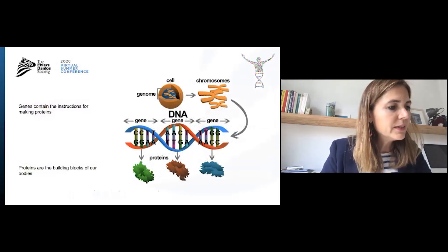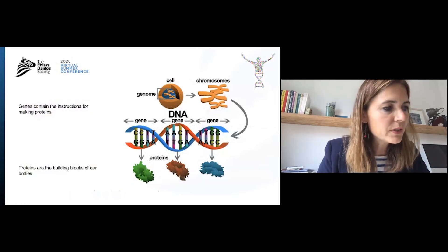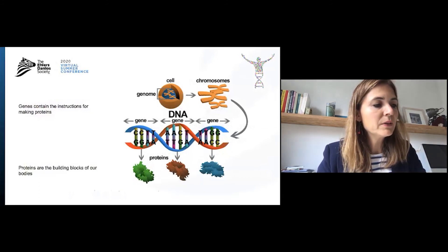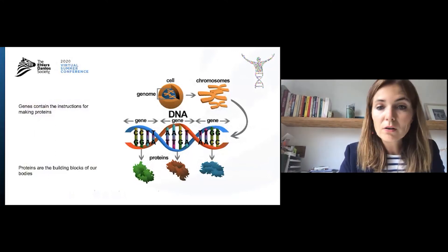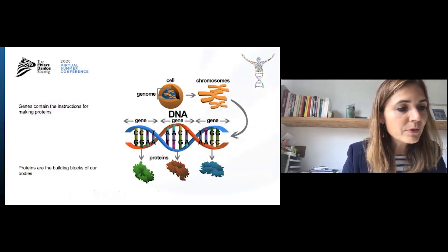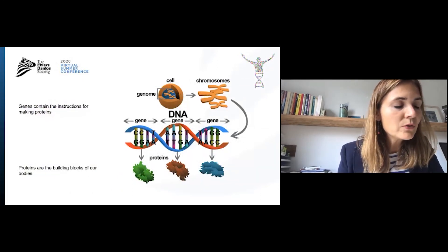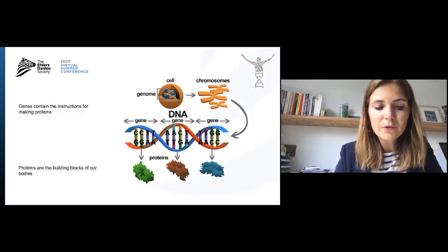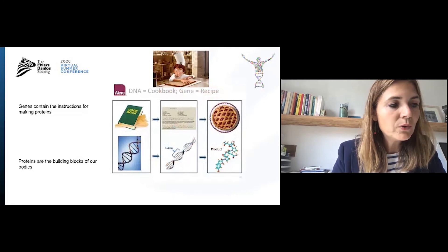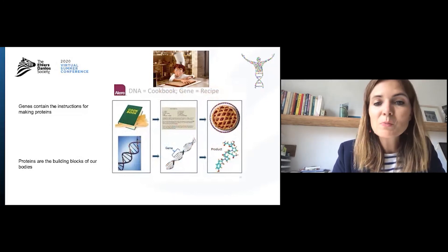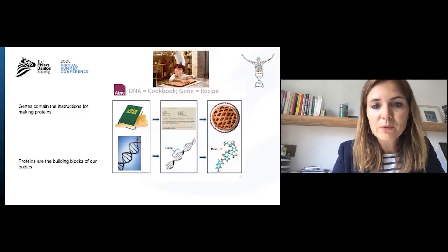Scattered on our DNA are our genes. Genes contain the instructions for making our proteins, and proteins are the real building blocks of our bodies. Examples of proteins include collagens, tenascins, fibrillins, and other proteins of the connective tissues, but also antibodies, hormones, ferritin, and many other proteins. You can look at DNA as a cookbook, with the genes being specific recipes within that cookbook, and the protein being the end product of that recipe.